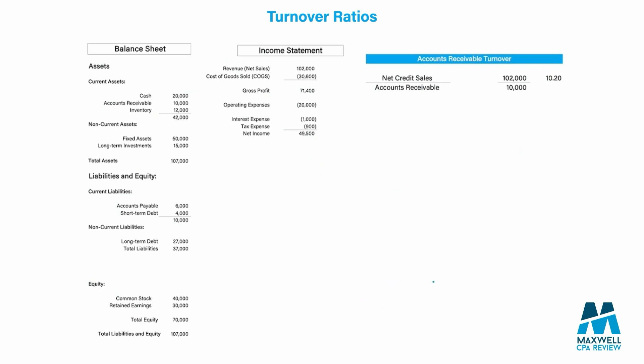Now let's move on to the turnover ratios, which involve numbers from both the balance sheet and the income statement. Turnover ratios measure the efficiency of a company by figuring out how many times you turn over an asset in a year. For AR, how many times do we collect our AR balance in a year? The more times it turns over, the quicker you are at collecting. With inventory, fewer turnovers means very slow-moving inventory, so we're not being efficient. The higher the turnover ratio, the better.